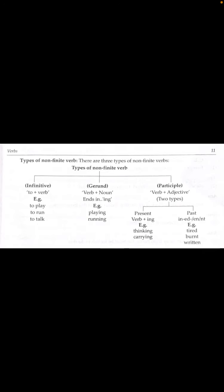Third is participle: verb + adjective. If a verb comes before an adjective, then it is a participle, and it has two types — present and past. For present participle, '-ing' is added to the verb; examples are 'thinking' and 'caring.' For past participle, '-ed' is added at the end of the verb; examples are 'tired,' 'burnt,' and 'written.'